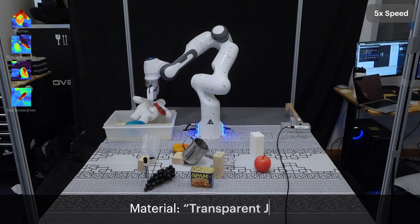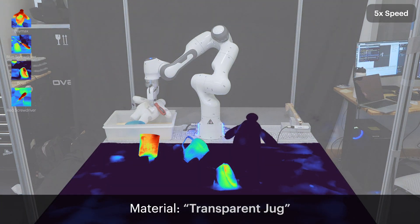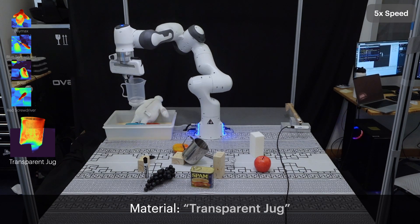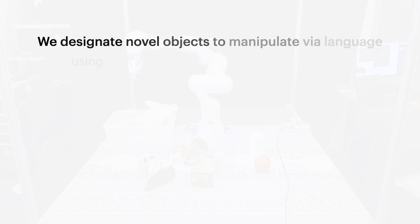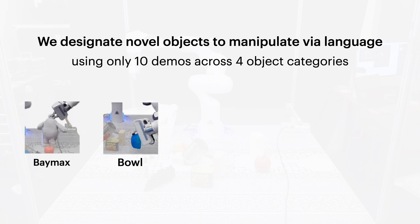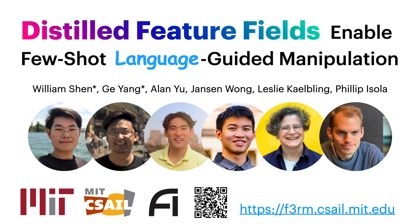Finally, language enables us to specify objects by their material properties. In this scene, there's both a transparent and a metal jug. We successfully predict a grasp on the transparent jug using language-guided pose optimization and execute it on the robot. To summarize, we designate novel objects to manipulate via language, achieving this using only 10 demonstrations across 4 object categories. We showcase the ability to generalize to out-of-distribution object categories, as well as specifying objects by their color and material properties. Thank you for watching, and please check out our website for the paper and additional experimental results.